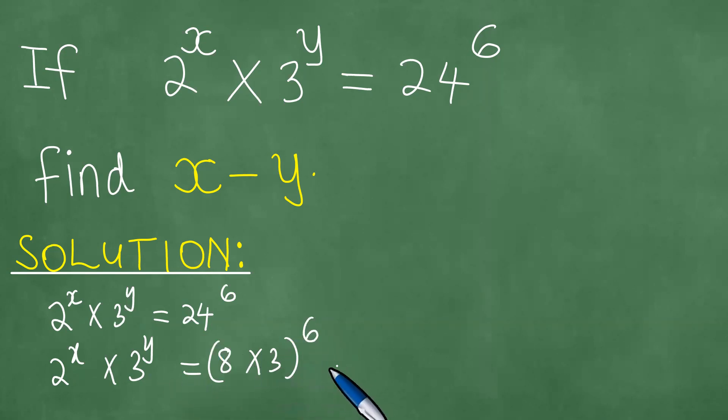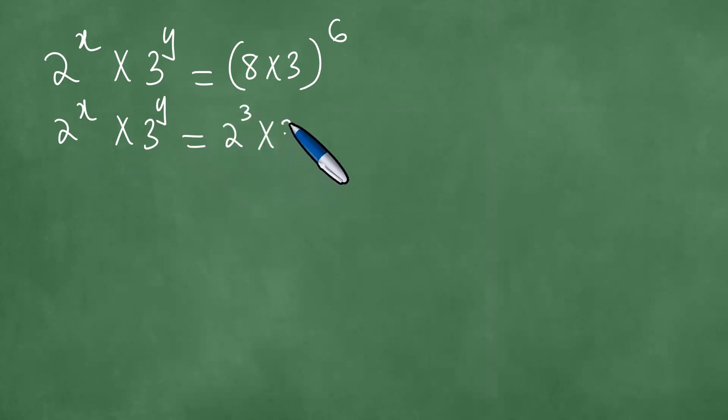So we note this, and we then have 2 to the power x times 3 to the power y equals 8 times 3 to the power 6, which means we have 2 to the power x times 3 to the power y equals, now the 8 is 2 to the power 3 times 3, all to the power 6.